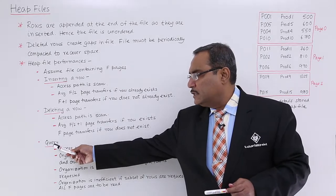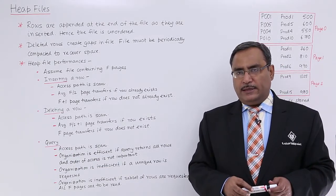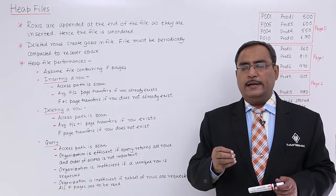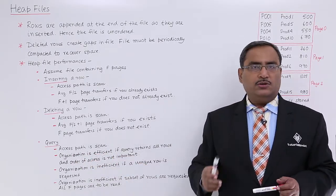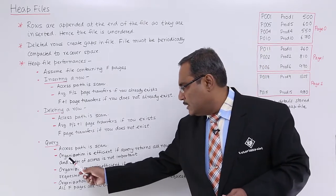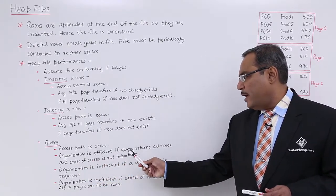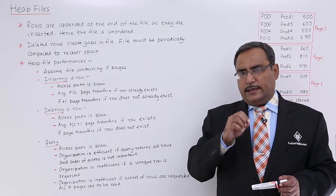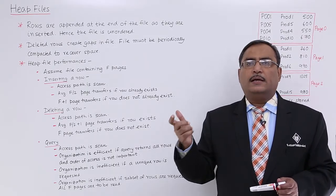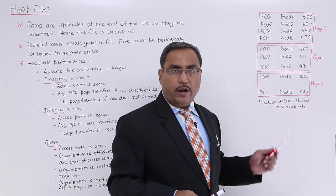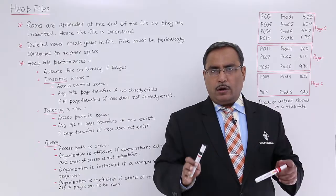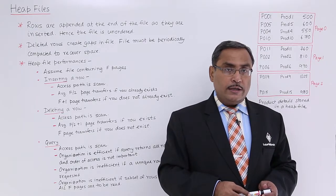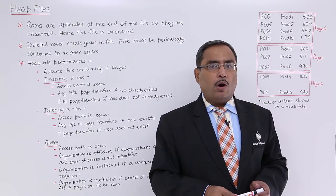Now we discuss querying. A query here means executing a select operation — reading some tuples from the database kept in the heap file. The access path is scan, so sequential access takes place. This organization is efficient if the query returns all rows and the order of access is not important. For example, a query like 'SELECT * FROM product' is most suitable for this data organization, especially when tuple ordering is not important.